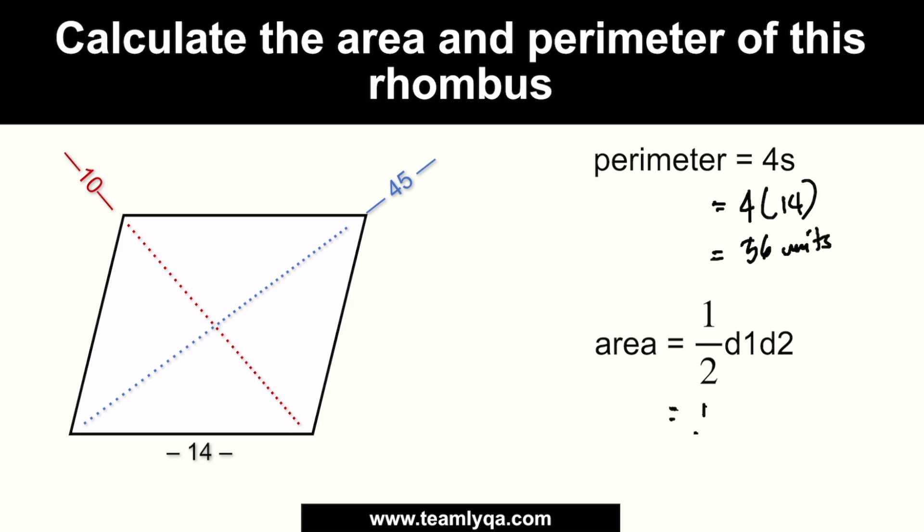Now, for the area, this is one-half times the first diagonal, we can call it 10, and then the second diagonal, which can be 45. Then, one-half times 10 is 5. Then, we multiply by 45. If we use our speed math technique for multiplication by 5, this is just 45 divided by 2 times 10, or 22.5 times 10, or 225 square units.